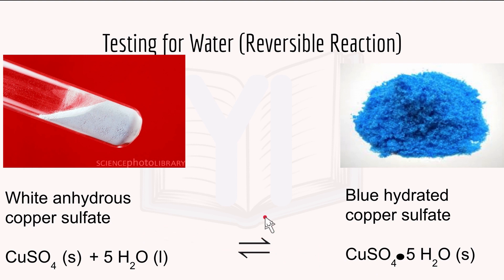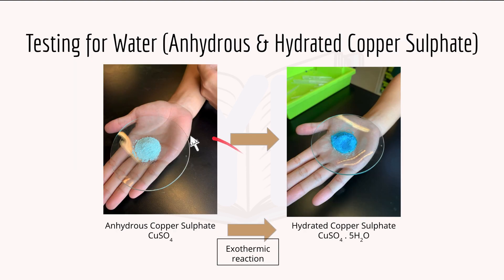We'll look more into exothermic and endothermic reactions, including the forward and backward reaction, in the later topic on rate, equilibrium, and energetics for this same equation. You can see anhydrous copper sulfate is generally whiter, while hydrated copper sulfate CuSO4·5H2O is much bluer with 5 moles of H2O. Adding water to anhydrous copper sulfate is an exothermic reaction.